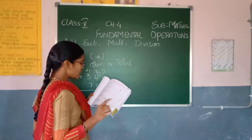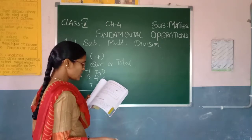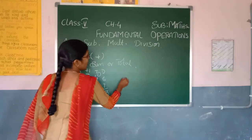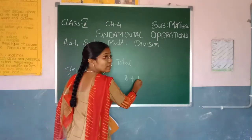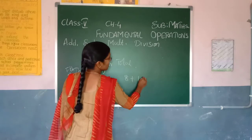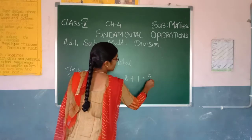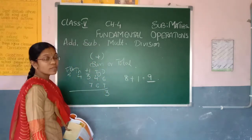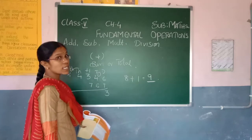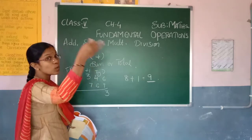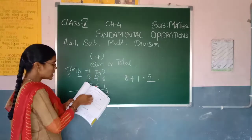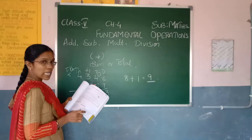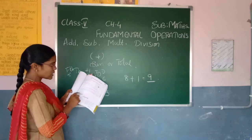If one is added to any number, we get its successor. Suppose you have eight — eight plus one equals nine, so nine is the successor of eight. It means the next number. So, these seven points you have to write in your classwork, along with this example.